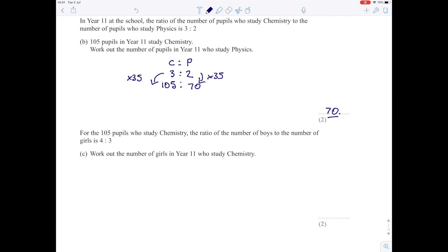For the 105 pupils who study Chemistry, the ratio of boys to girls is 4 to 3. All together we have 105 pupils. 4 parts and 3 parts give 7 parts. 105 divided by 7 gives 15, so each part is worth 15 pupils.